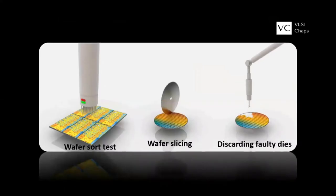The processed wafers then go for testing, where each die on a wafer is probed and marked as good or bad. The wafer is then broken into many individual dice. Good dies go for packaging and are packaged as per the packaging requirements.